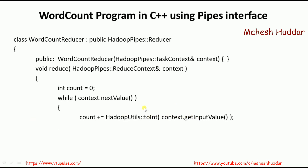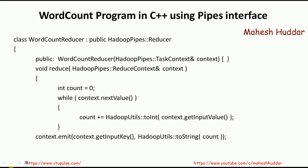So count is converted to int and that integer value is added to count. For example, if foo 1 is the first input, count becomes 1. If foo 1 comes again, 1 is added to the previous value of 1, making foo 2. This happens for all keys and the output is emitted using context.getInputKey as the word and count as the value — so foo appears 3 times giving 3, linux 2 times giving 2, bar 1 time giving 1. This is the final output of the reducer.